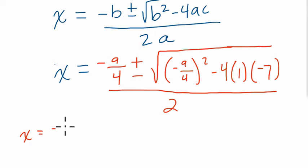So what do we do? Well, x is equal to negative nine-fourths plus or minus the square root of 81 sixteenths. That's negative nine-fourths squared. You just multiply negative nine-fourths by itself. And we're going to subtract negative 28, right? Because 4 times 1 times negative 7 is negative 28. And we're subtracting it, so it's really plus 28.